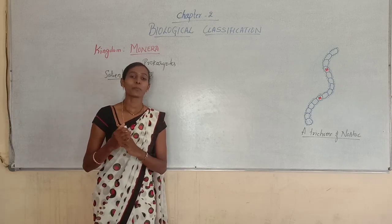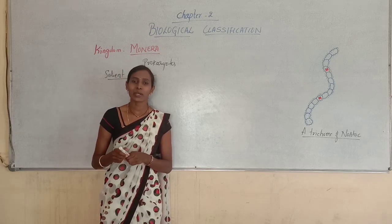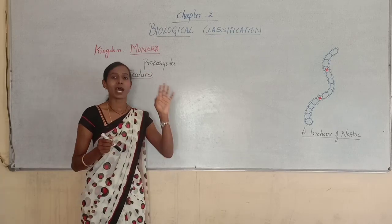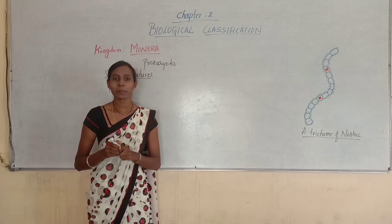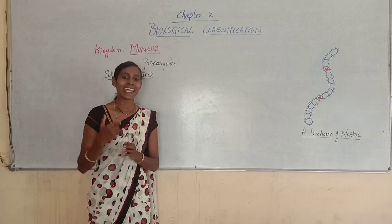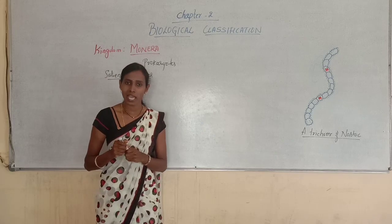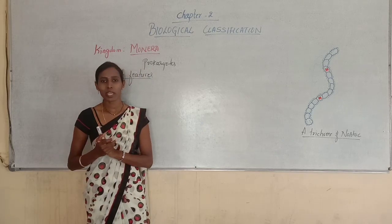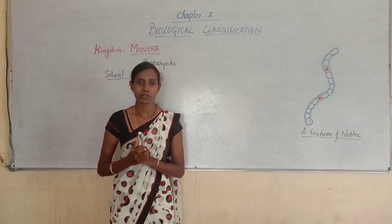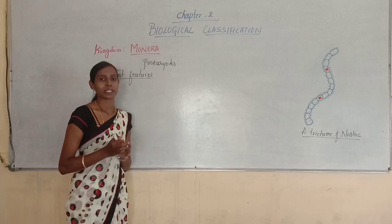Kingdom Monera includes the most primitive, simple, microscopic, unicellular, and prokaryotic organisms. Primitive means they are the first form of organisms. They are very simple, microscopic — they cannot be seen through the naked eye — and unicellular, meaning made up of a single cell. Prokaryotes are organisms which lack a true nucleus and membrane-bound cell organelles.